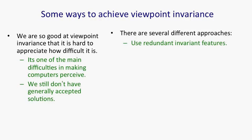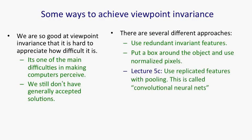The first approach is to use redundant invariant features. The second approach is to put a box around the object so that you can normalize the pixels. The third approach is to use replicated features and pool them. This is called convolutional neural nets, and I'll go over that in great detail.